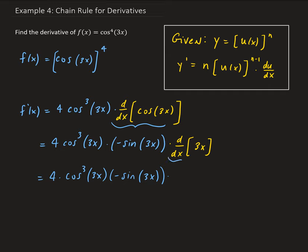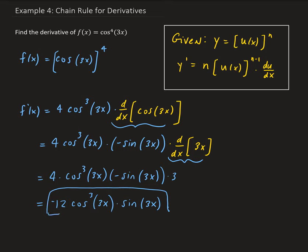And then we take the derivative of 3x, which is just 3. We can go ahead and simplify this: we get minus 12 times cosine cubed of 3x times sine of 3x. That is the derivative of our function.